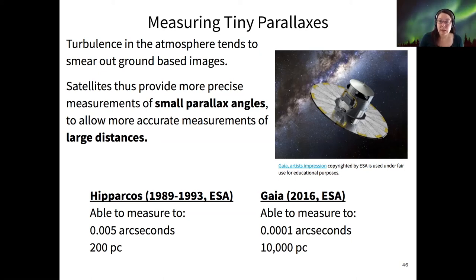So there are two satellites by the ESA. Hipparcos had several large data runs in the early 90s and it measured out to 0.005 arcseconds, which is distances around 200 parsecs. And Gaia, which is the follow-up launched in 2016 and which is still operating today, can measure out to 10,000 parsecs.